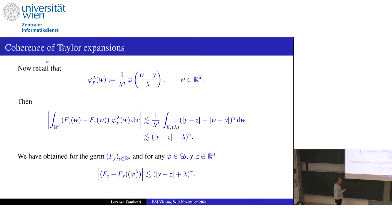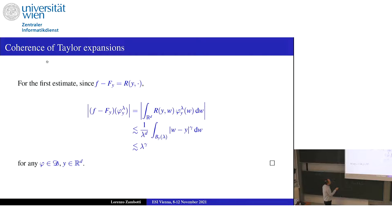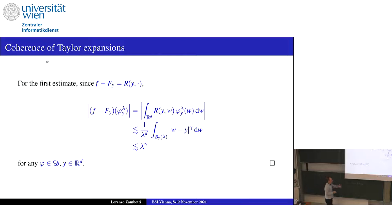So you have obtained this coherence property for the germ of the Taylor polynomials up to level gamma — the level at which you stop the monomials. The other formula for f minus F_x is also simple: the remainder is bounded by |w minus y|^gamma, and integrating over the ball gives lambda^gamma times lambda^d, yielding lambda^gamma as required. In the case of Taylor expansions, which we all know well, you have two simple and nice formulae.